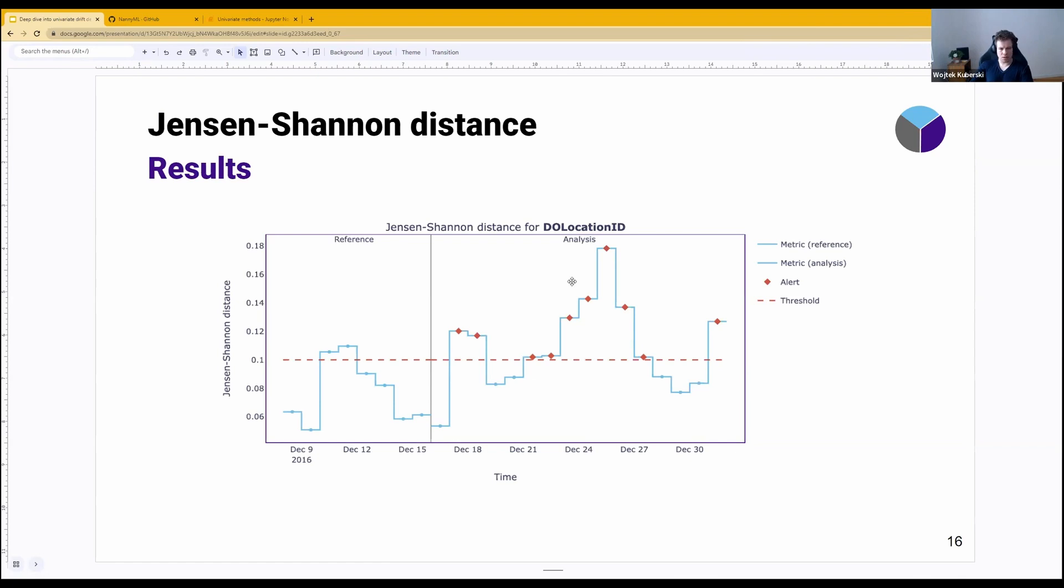And here we see that the metric increases at some point. We have then alerts, which tell us something's off. It's a separate column in your results that you can then later use to potentially do some automated training, automated checks, based on whether you have alerts on your univariate drift detection measure.